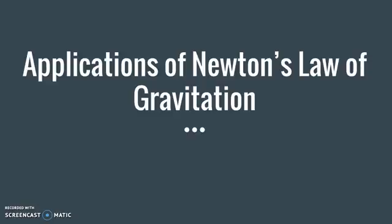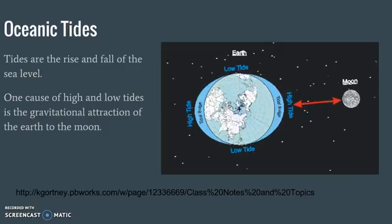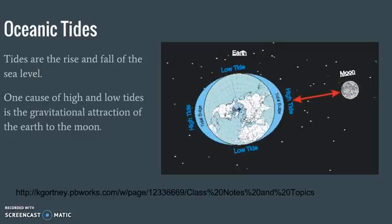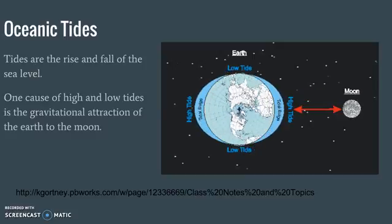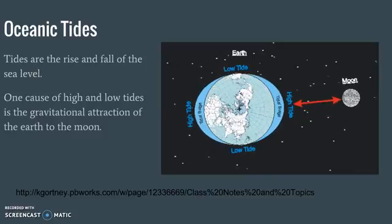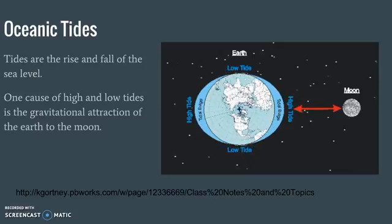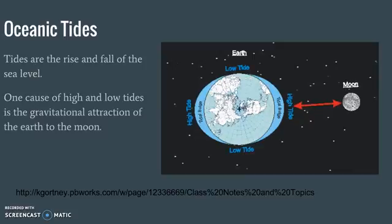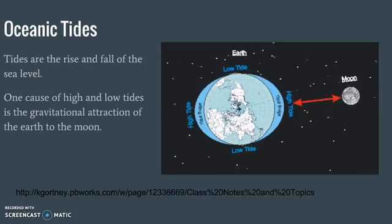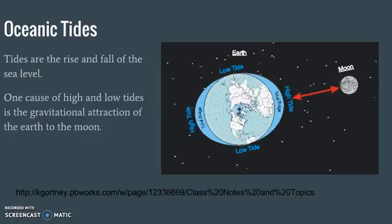Today we're going to talk about some applications of Newton's law of gravitation. The first is that this law affects ocean tides. Tides are the rise and fall of the sea level on Earth. One of the main causes of high and low tides is the gravitational attraction between the Earth and the Moon.